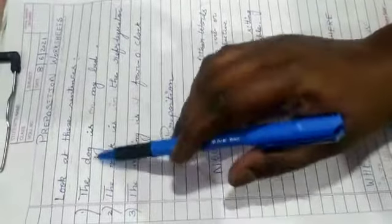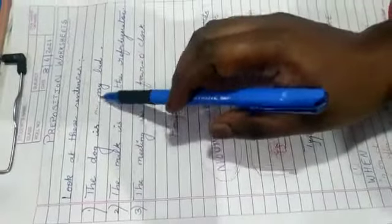Without 'on' we cannot read the dog is my bed. We have to interlink like noun and other word. There's some relationship with these words, so we put it together with the words here. See: on, in, at - these are prepositions.